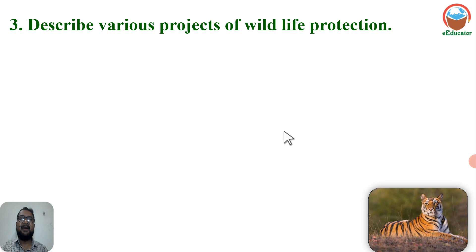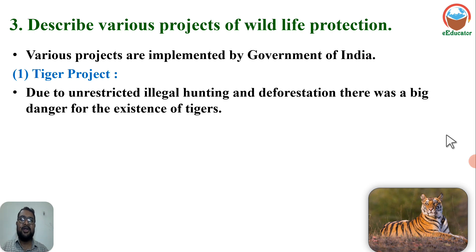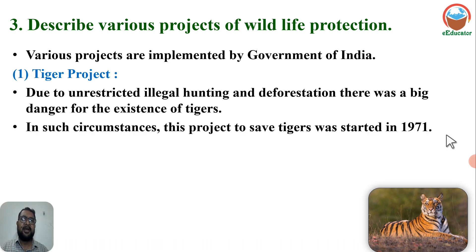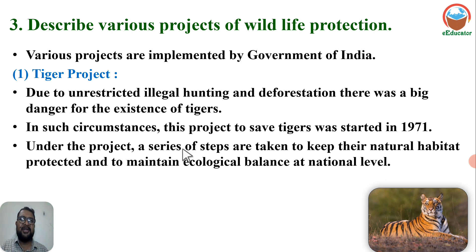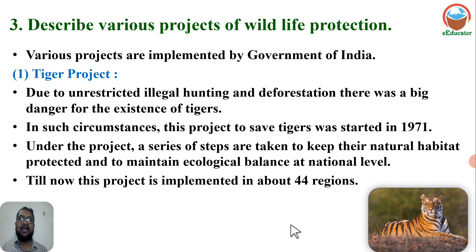Describe various projects of wildlife protection. Various projects are implemented by the Government of India for protection of wildlife. Tiger Project: Due to unrestricted illegal hunting and deforestation, there was a big danger to the existence of tigers. The project to save tigers was started in 1971. Its main aim is to protect the tiger's natural habitat, maintain ecological balance, and help tigers survive. Till now this project has been implemented in about 44 regions in India.